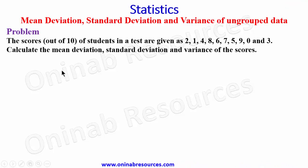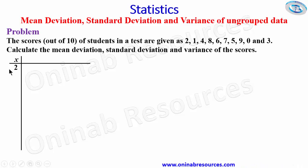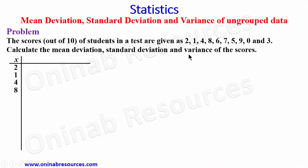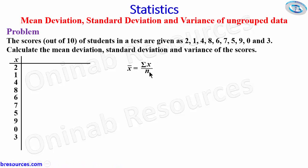We need to present our work in a tabular form. We have a table where the first column represents x — the scores of the students: 2, 1, 4, 8, 6, 7, 5, 9, 0, and 3. First and foremost, we have to calculate the mean, that is x̄, which is summation of x over n.